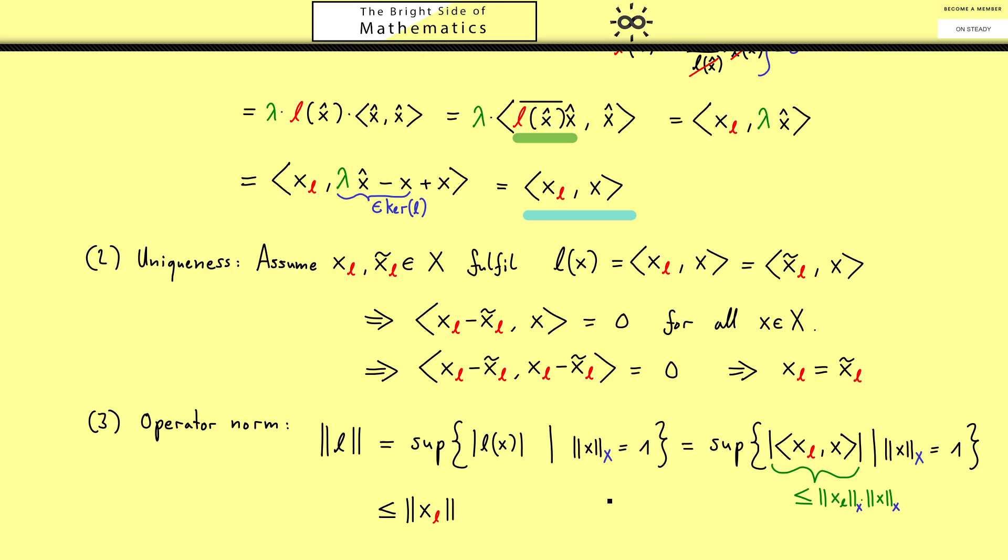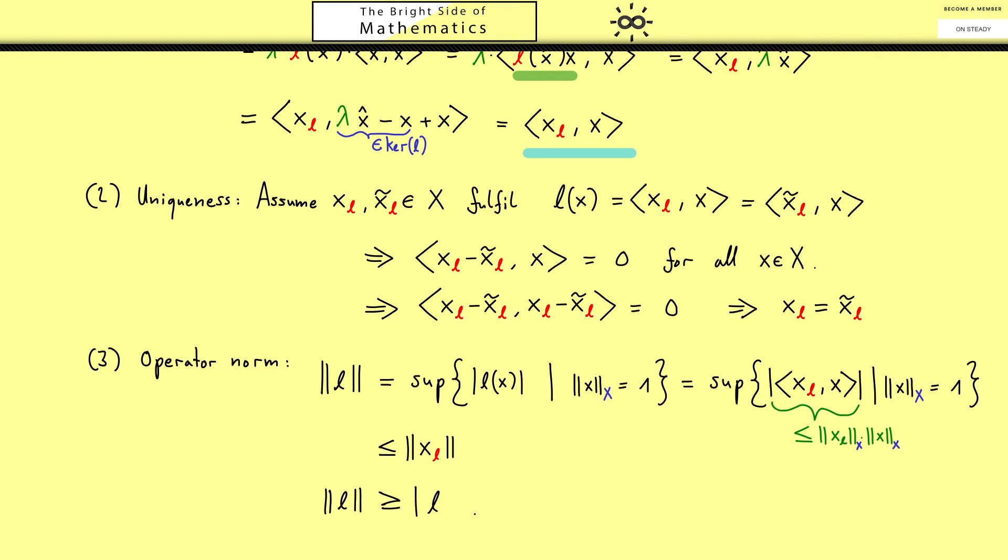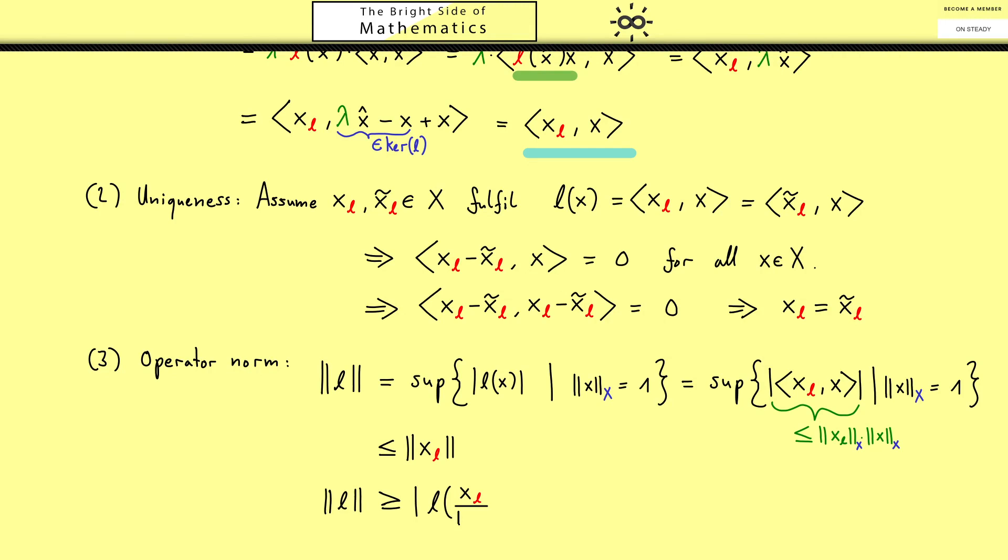Okay so this is one half of the thing we wanted. We have an upper bound, now we need a lower bound. And we always get that by just putting in one unit vector. And a good choice here would be of course the normalized xL. Again this is the inner product of xL with this vector. And there you see immediately one norm cancels so only the norm of xL remains. Hence we have our lower bound which is exactly the upper bound so we have shown the equality. And that's the end of our proof for today.